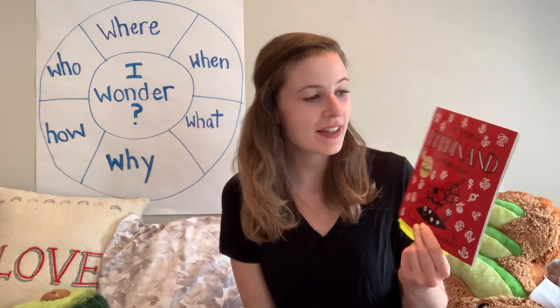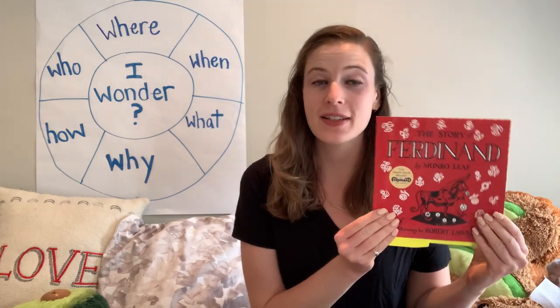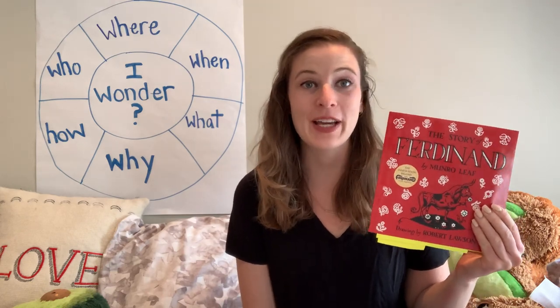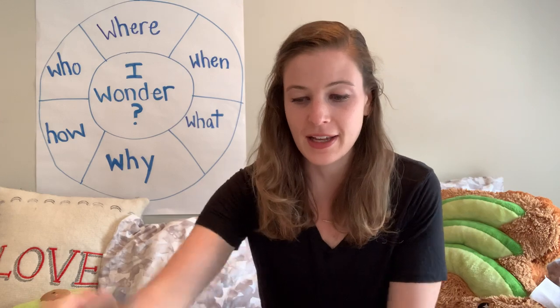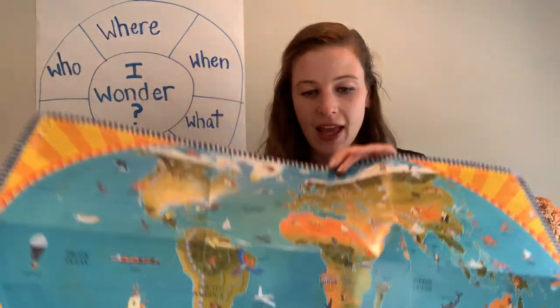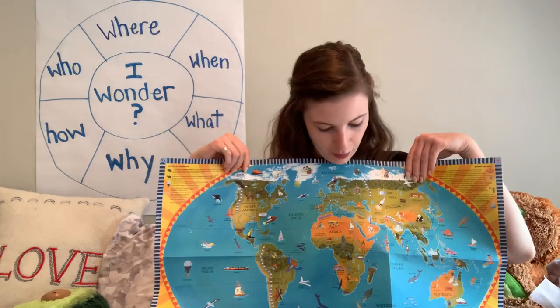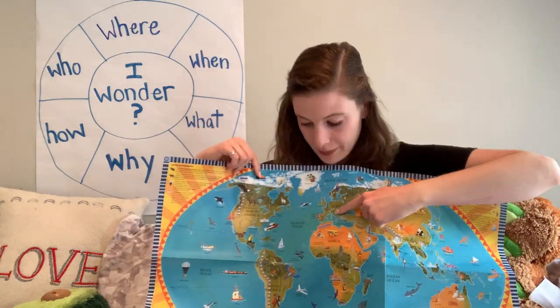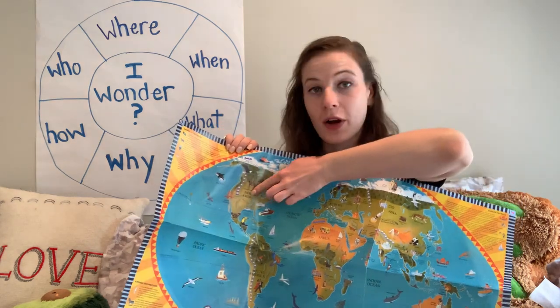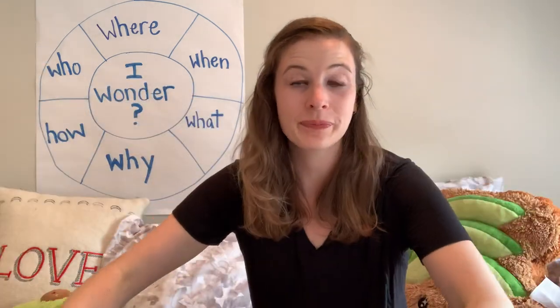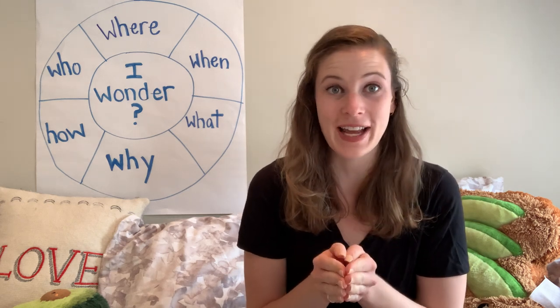Today we're going to be reading the story of Ferdinand, which is set in Spain. First, we're going to look for Spain on our map. Spain is a country in Europe, so we'll look at our big world map and locate Spain. Here's Europe — we live in North America. North America is our continent, the United States of America is our country, Maryland is our state, and Baltimore is our city.